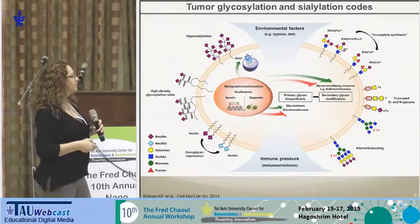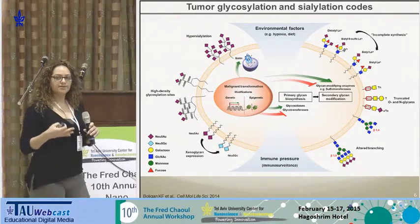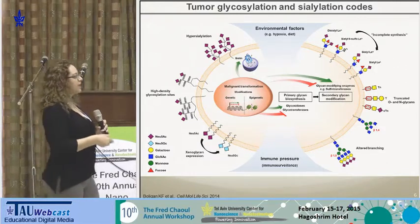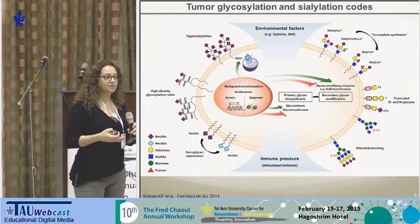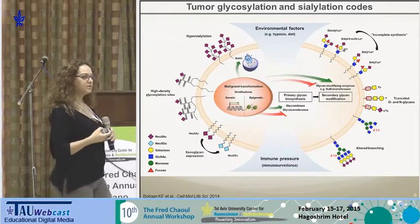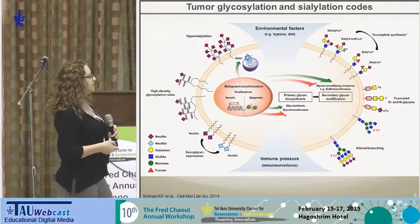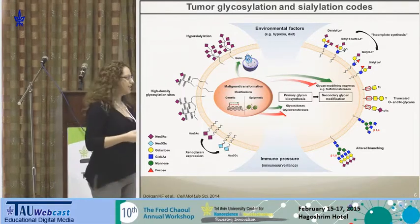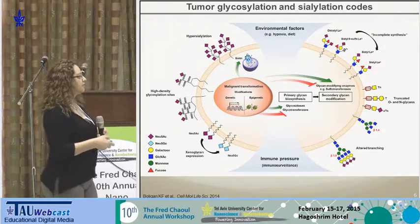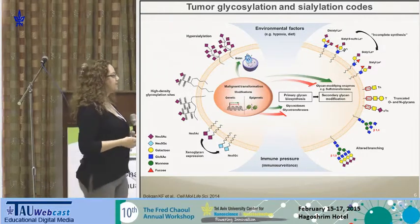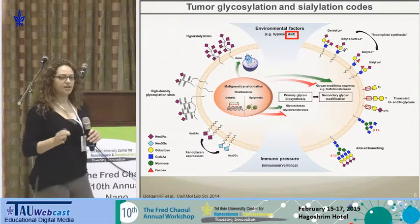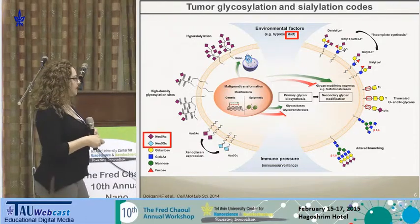This is an example of the sugar chains expressed on cancer cells. These changes are not random — they are caused by overexpression of certain glycosyltransferases, downregulation or overexpression of glycosidases or enzymes that cleave sugars, genetic modifications, epigenetic modifications, and expression of transporters. All of these cause the changes we see in sialic acid expression on cancer cells. And another major important factor is diet — today I'll tell you how diet can really affect the expression of sialic acids.